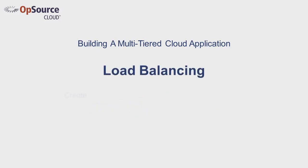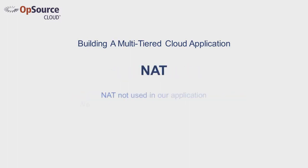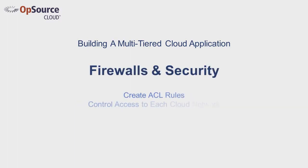Load balancing is an important feature which allows us to add fault tolerance to our application. We will configure virtual IPs to enable basic load balancing of our web and application tiers. Although we won't be implementing NATs in this architecture, we will review it as it is a commonly used feature. Firewalls are important to any publicly accessible website. We will show how the ACL rules are used to grant public access to our application, and additionally we will grant access between the application tiers.